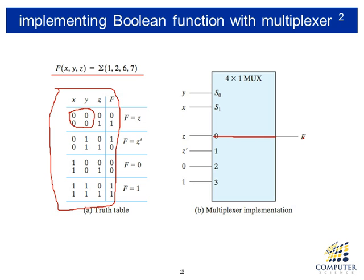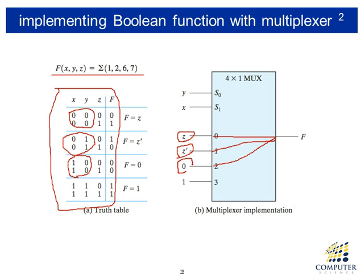In the next two rows, X and Y have values zero and one. When X and Y are zero and one, input one is connected to the output. The function should be one and zero, which is the complement of Z, so we connect the complement of Z to input one. When X and Y are one and zero, input two is directly connected to the output, and the expected function values are zero and zero. So we connect a constant zero — ground voltage — to input two.